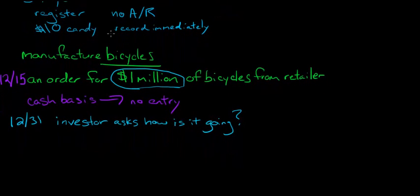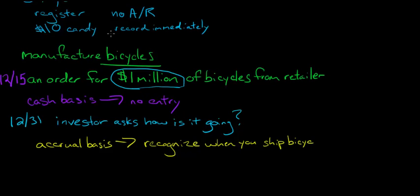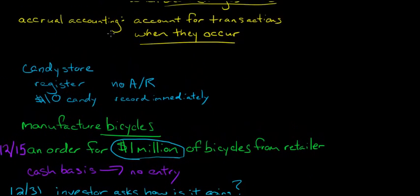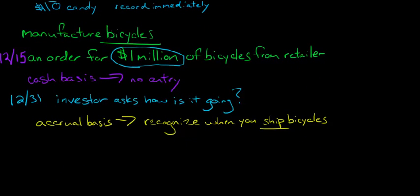So what does accrual accounting do? Well, accrual is just going to recognize now. Accrual basis recognizes when you ship those bicycles out. That's a sale. You've done all you've needed to do to complete the transaction. You manufactured the bicycles, you shipped the bicycles. Now you're just waiting on payment. So, if we look back at the accrual accounting, it says we recognize the transactions when they occur. So, you ship the bicycle. The transaction has occurred.